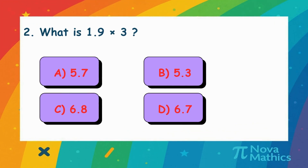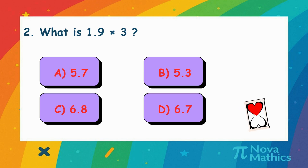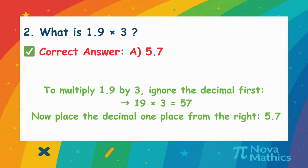2. What is 1.9 times 3? Let's multiply 1.9 by 3. First, think of it without the decimal. 19 times 3 is 57. Now put the decimal back one place. That's 5.7.